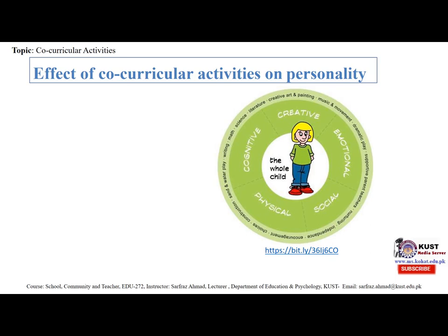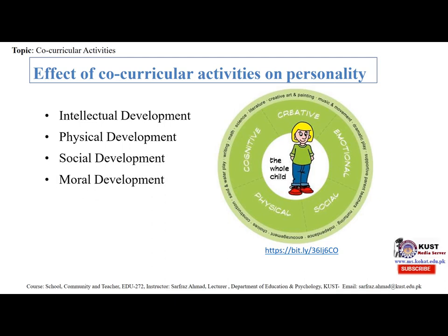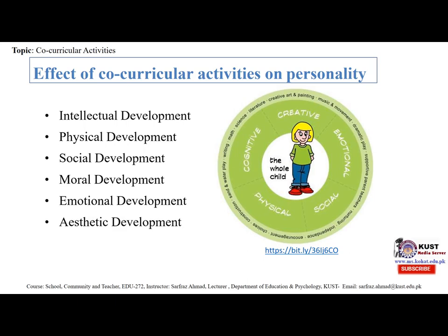Some tips for students to manage academic and co-curricular activities: academics come first — while extracurricular activities are essential, academics take priority. Be selective about extracurricular activities, manage your time, learn to prioritize, adopt a healthy lifestyle, take breaks, and get advice from academic advisors or seniors. Through co-curricular activities, intellectual, physical, social, moral, emotional, and aesthetic development of the child all increase.